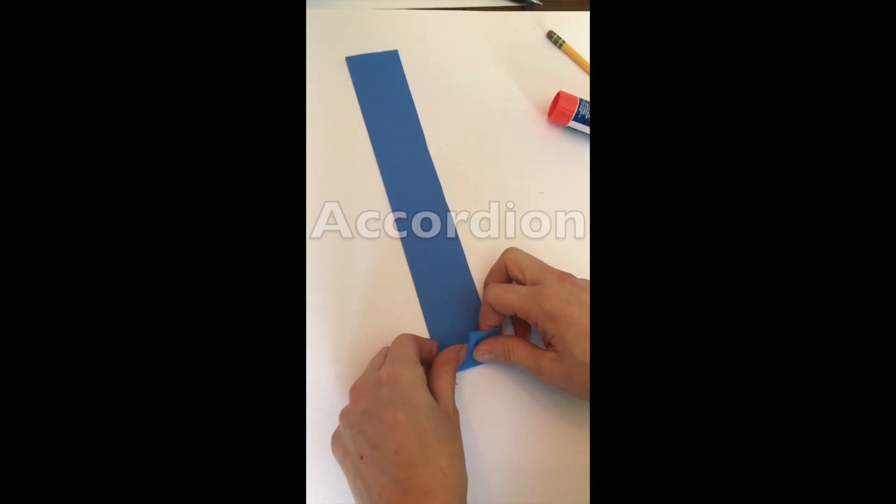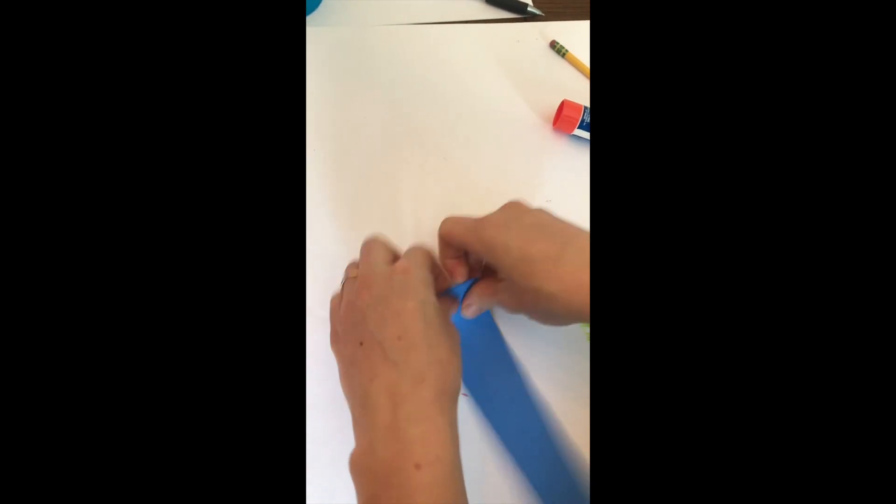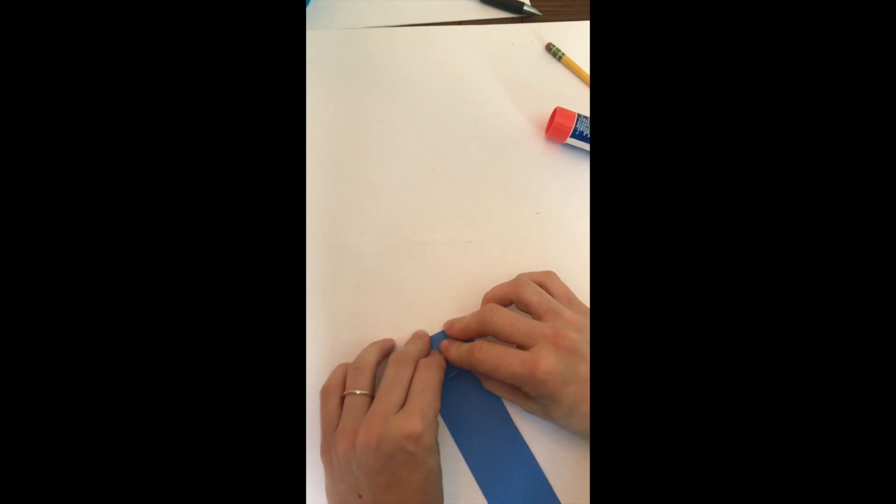An accordion fold or a fan fold is when you have a strip of paper and you just fold up a little bit. Keep flipping your paper over, folding more, flip it over, fold more. Make sure the folds are all equal.